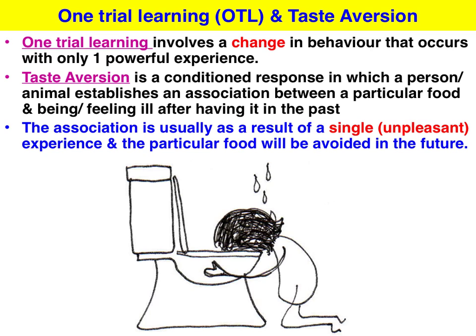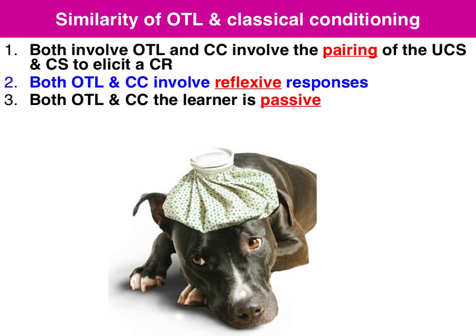Thus, the particular food will be avoided in the future — it could be fish after eating dodgy fish, maybe a dodgy pie, something like that. So OTL is sort of classical conditioning, but not quite. What do we mean by this?